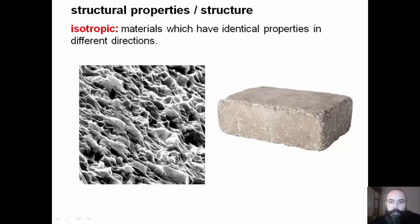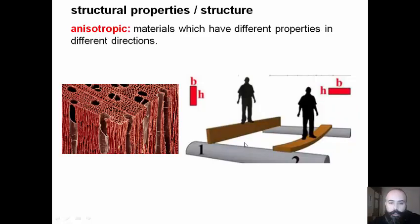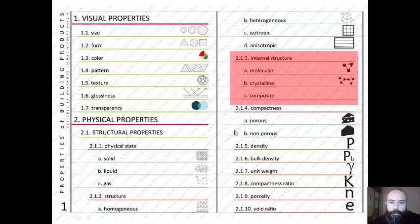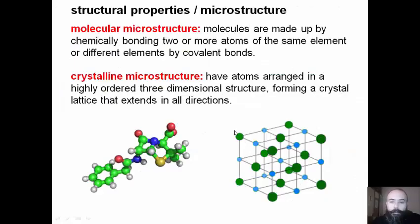Isotropic materials show identical properties in different directions. Anisotropic materials show different properties in different directions. The internal structure of building products can be molecular.